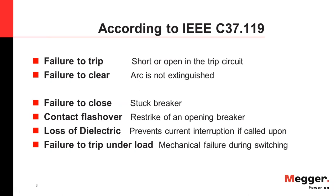Starting with what is Breaker Failure. According to IEEE C37.119, which is a standard for Breaker Failure Protection, they have categorized Breaker Failure into these categories. The first two — Failure to Trip and Failure to Clear — are called Breaker Failure. The rest can lead to a Breaker Failure, but they are not categorized exactly as Breaker Failure.